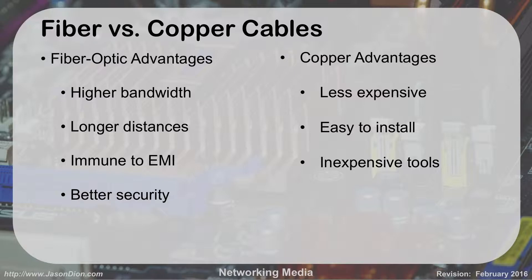Comparing fiber and copper: fiber offers much higher bandwidth, much longer distances, immunity to EMI, and better security — you can't get data off the fiber without physically breaking into the line. Copper's advantages are that it's cheaper, easier to work with, easier to install, and the tools are inexpensive. A copper cable kit with crimpers, ends, strippers, and a tester runs about $10 on Amazon, versus about $200 for a basic fiber kit. Most businesses still use unshielded twisted pair because of cost and efficiency — one gigabit is fast enough and the price is right.